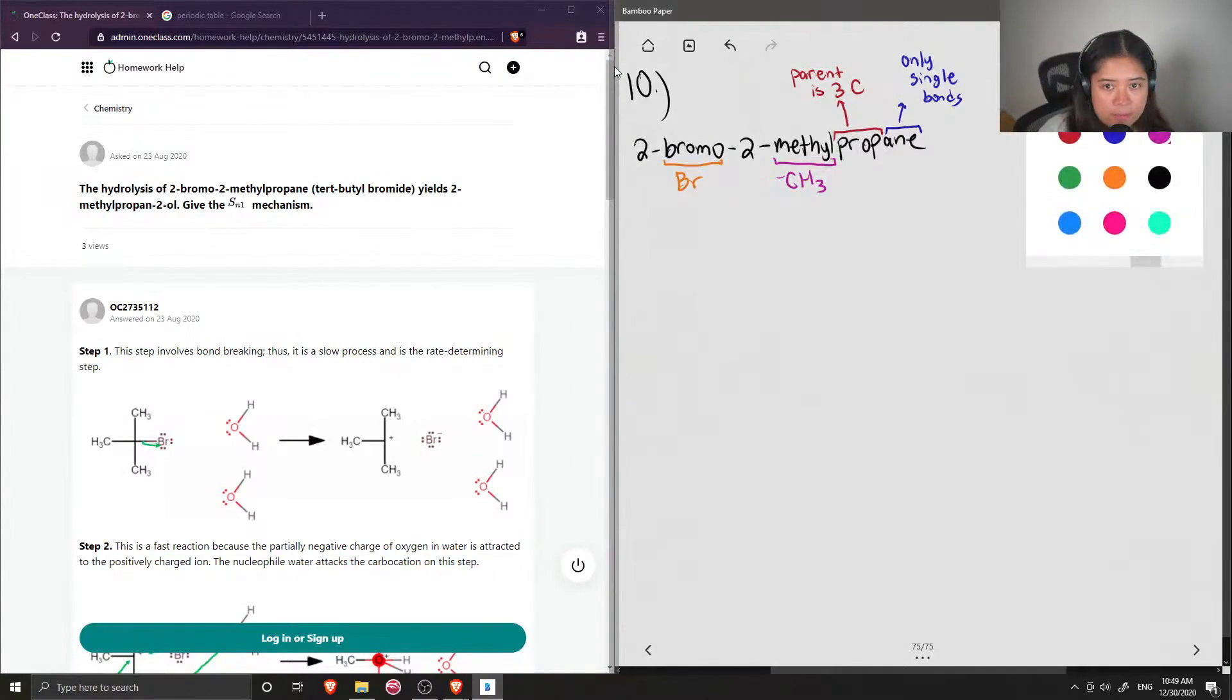And we also have a methyl group on carbon 2 as well. Okay, so now that we have deconstructed our word, let's write what this would look like. Propane is three carbons long, so we can number them one, two, and three. And then on carbon 2 there is a bromine group and also on carbon 2 there is a methyl group, and then carbons 1 and 3 just have hydrogens.